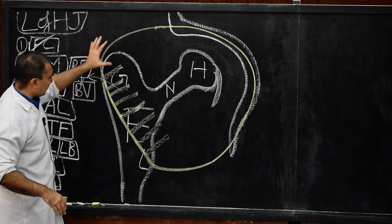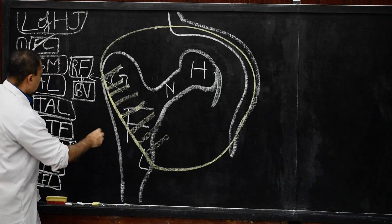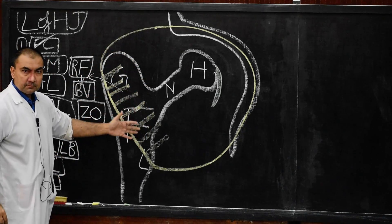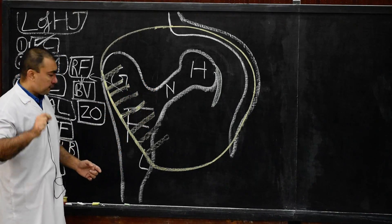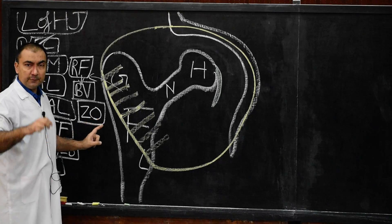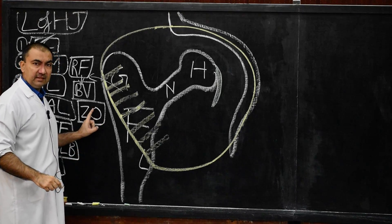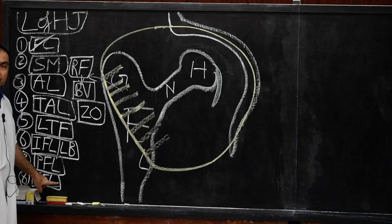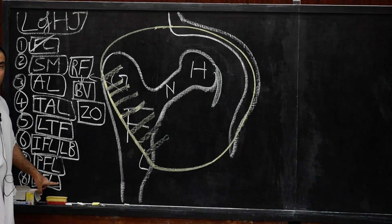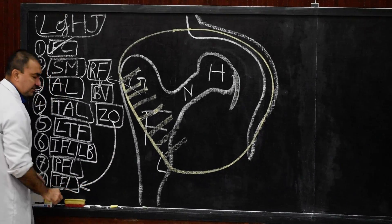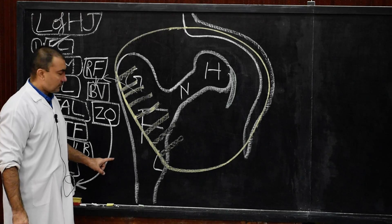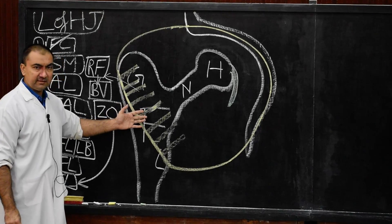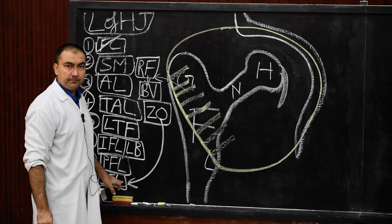The last point regarding the fibrous capsule: the deepest fibers of the capsule form circular fibers called zona orbicularis. This zona orbicularis is continuous with the ischiofemoral ligament, which is the last of the eight ligaments.